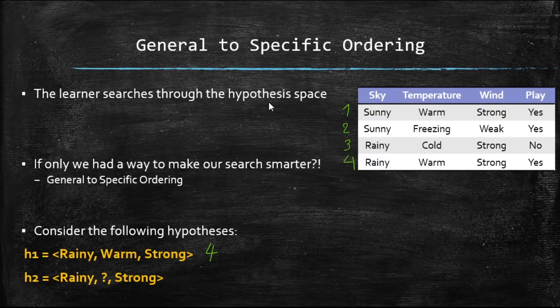However, for hypothesis number two, which examples? We've got four definitely satisfies it. Also number three, right? Because number three has rainy and strong, but at the same time, even though for temperature it has cold. But guess what? H2 doesn't care about that.